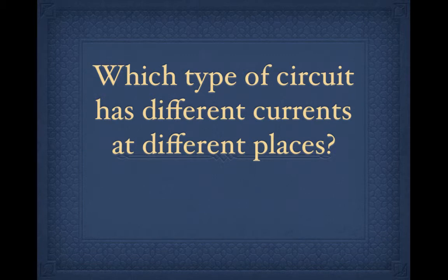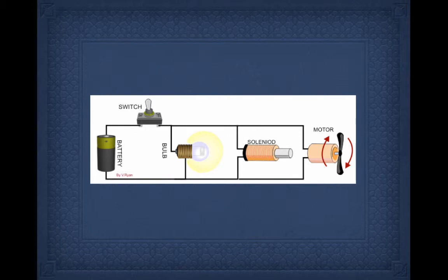Which type of circuit has different currents at different places? If it has different currents, it means it must have more than one path. So it must be a parallel circuit. And here's a parallel circuit. We haven't studied solenoids and motors, but if the current splits, it doesn't matter what the elements are. It's a parallel circuit.